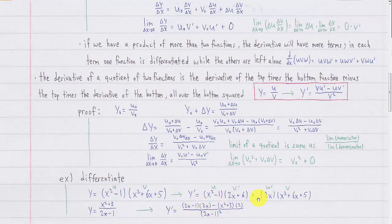Notice that in the product rule, the order doesn't matter — you could have u prime times v plus u times v prime, or the reverse. But in the quotient rule, the order does matter: you must do leave bottom, derivative of top first, then minus derivative of bottom times leave the top. You can't switch that order in the quotient rule.